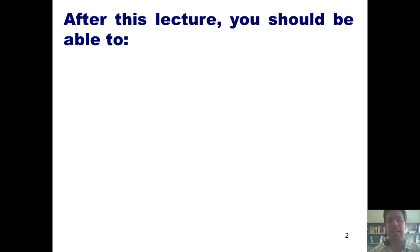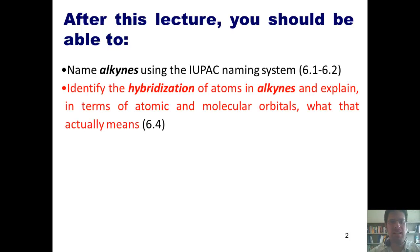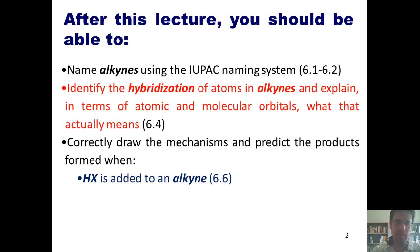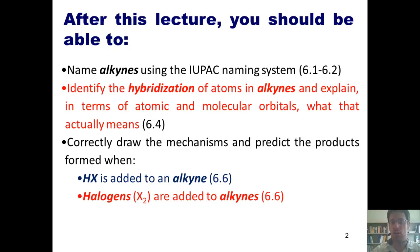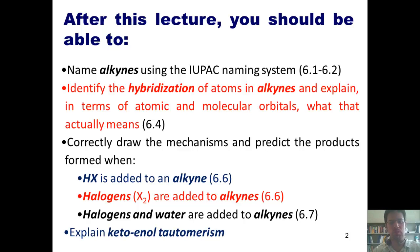After today's lecture, you should be able to do the following: name alkynes using the IUPAC naming system; identify the hybridization of atoms in alkynes and explain in terms of atomic and molecular orbitals what that actually means; correctly draw the mechanisms and predict the products formed when HX is added to an alkyne, halogens (X2) are added to alkynes, and halogens and water are added to alkynes; and lastly, be able to explain keto-enol tautomerism.